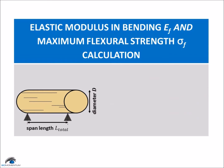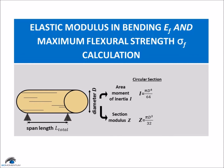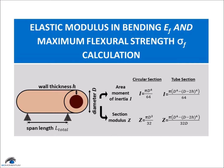The sample's shape and dimensions also need to be considered. For a circular section, the area moment of inertia and section modulus are calculated as shown. For a tube section, they are calculated as shown.